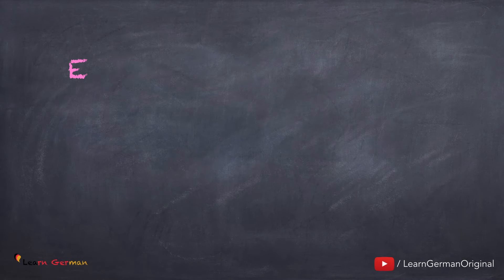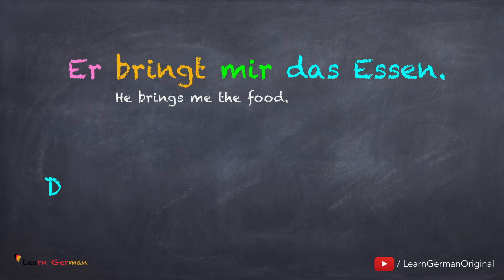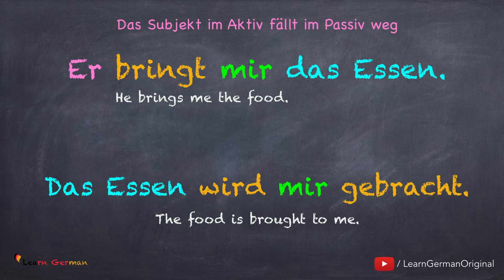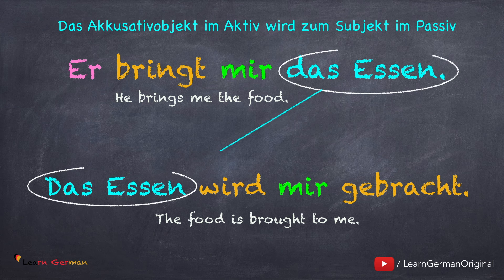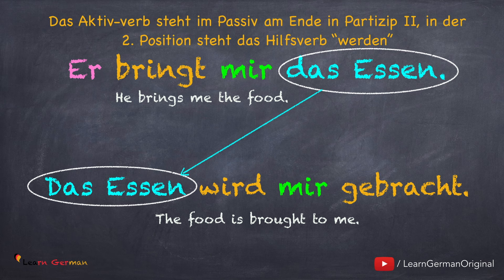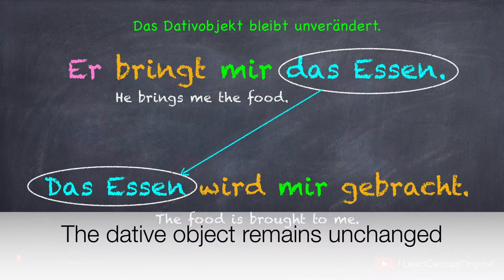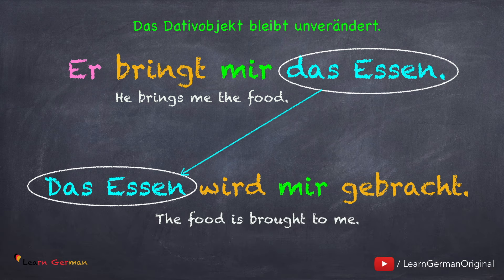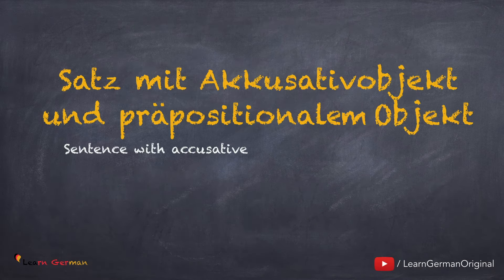Jetzt haben wir einen Satz mit Akkusativ- und Dativobjekt. Er bringt mir das Essen. In Passiv: das Essen wird mir gebracht. Hier kann man sehen, dass das Subjekt im Passiv nicht da ist. Das Akkusativobjekt ist jetzt das Subjekt im Passiv. Das Verb steht am Ende in Partizip 2 und in der zweiten Position steht das Hilfsverb werden. Das Dativobjekt bleibt unverändert. Diesen Satz kann man im Passiv auch so formulieren: Mir wird das Essen gebracht.